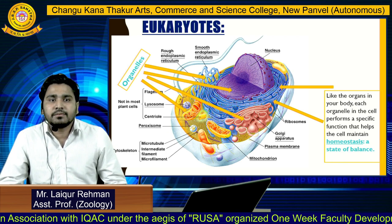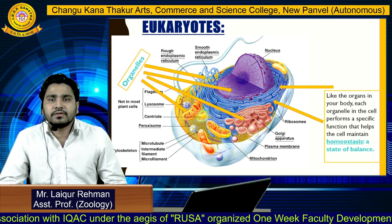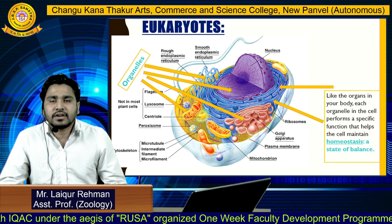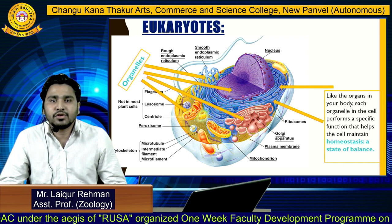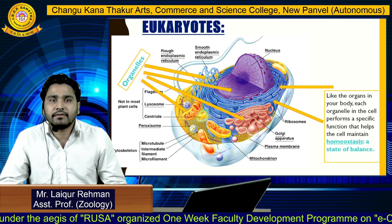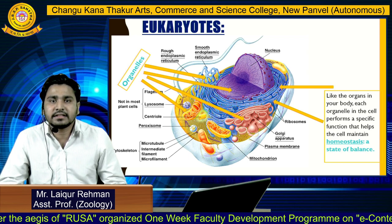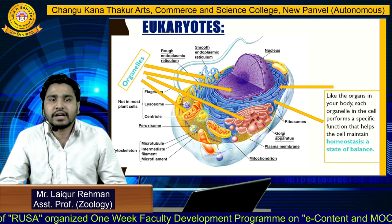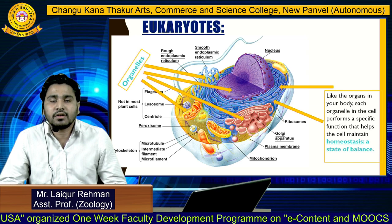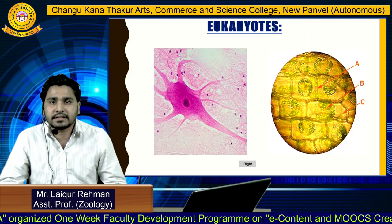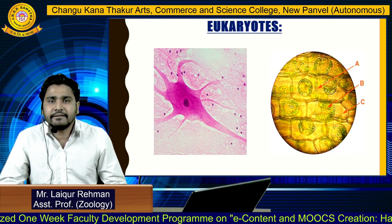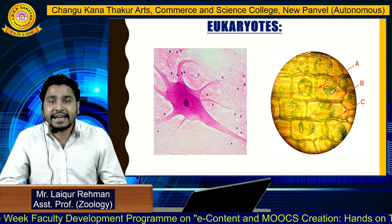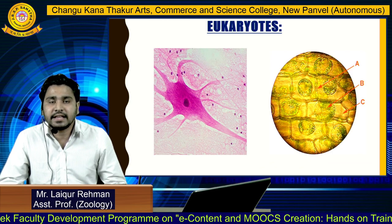Here you can see a well-defined eukaryotic cell, like the organs in your body. Much of the organelles are inside the cells — just as the human body has lungs and a heart, a cell's body also has organs called organelles. Here you can see a well-defined eukaryotic cell diagram of a nerve cell and a plant cell.